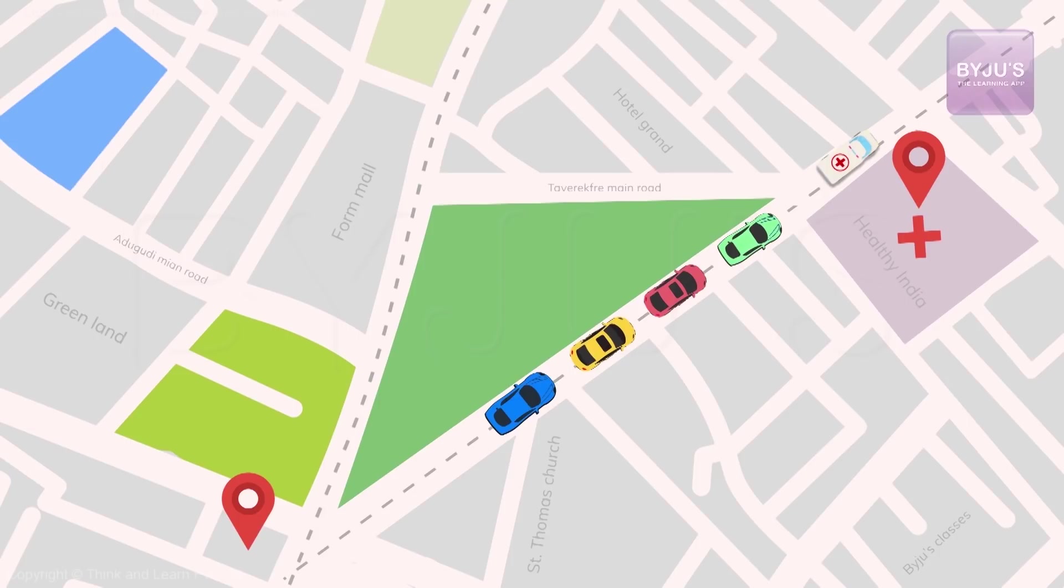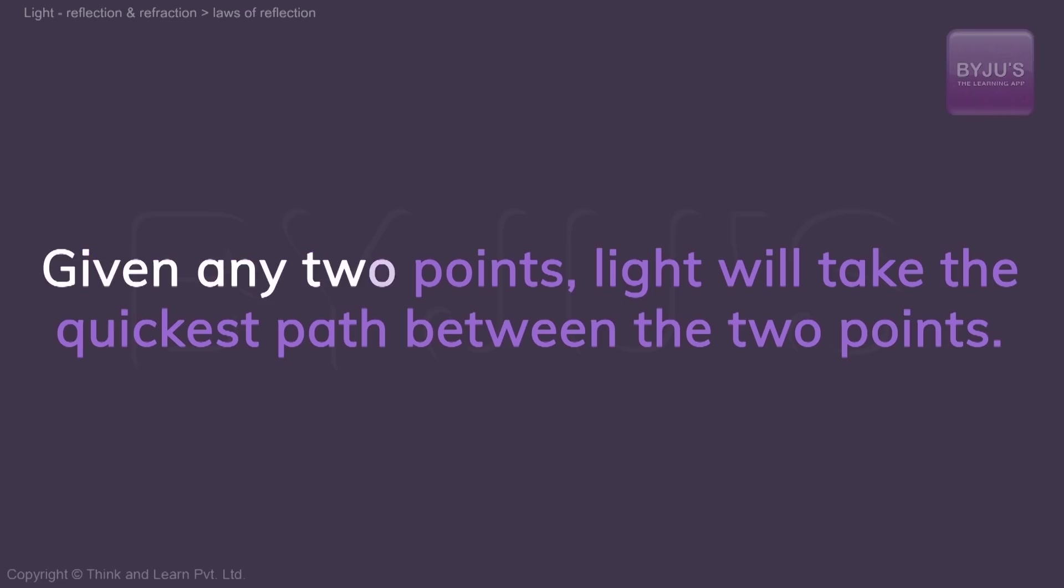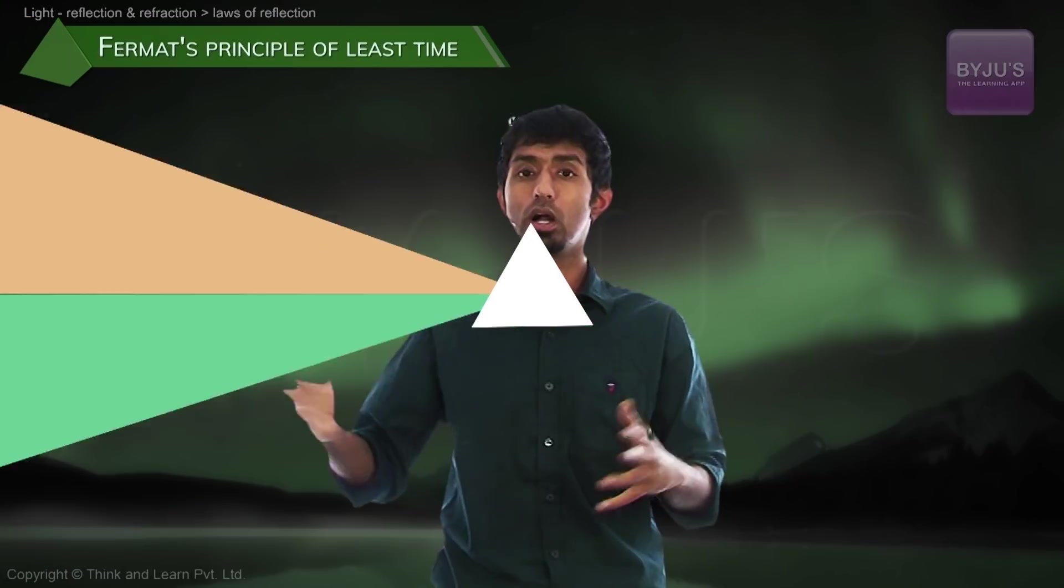And we all know sometimes the shortest path is not the quickest path. Anybody who lives in a city knows this, right? The shortest path between two points is a road which takes you very cleanly towards it, but if there's too much traffic on it, you might take a much longer path but reach a lot quicker. Given any two points, light will take the quickest path between the two of them. And if you accept this, trust me, there is not a single thing else that you can't infer from this particular thing alone. And we'll show you how.